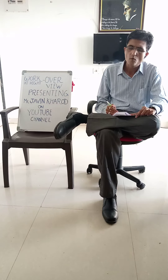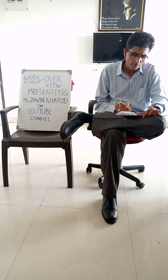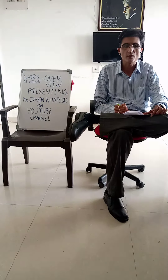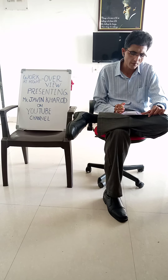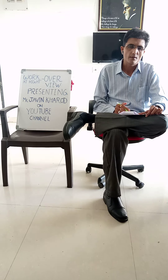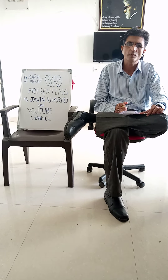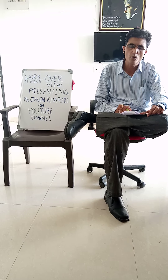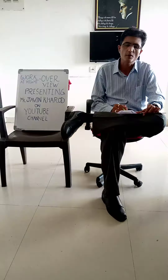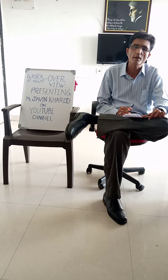Documents maintained for work at height include: work permit, competent person list, training records, and PPE inspection records. All documents are maintained before the work at height permit starts. This covers the basic information about work at height. I hope you gained sufficient knowledge after watching this video. On the next chapter, we will cover some other topics. Till then, goodbye and do take good care of yourself.